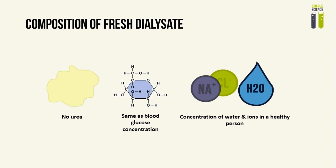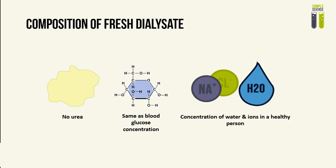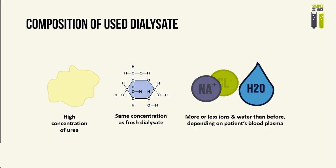The fresh dialysate has the concentration of water and ions that is typically found in a normal healthy person. If the patient is healthy, then no water nor ions will be removed. But if the patient's blood is too diluted or has a high concentration of ions, then water and ions will diffuse from the patient's blood into the dialysate in order to be removed. The opposite is applied for those with low water and ion concentration in the blood. As a result, used dialysate will contain a very high concentration of urea, the glucose concentration is often unchanged, and the concentration of water and ions depends on the patient's blood.